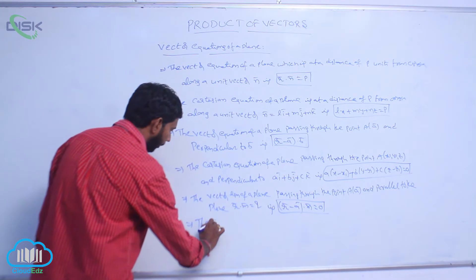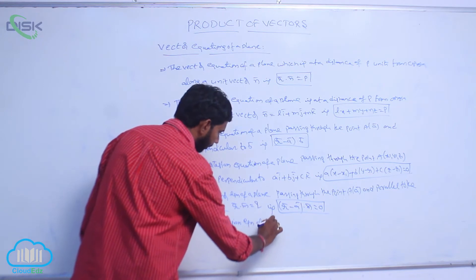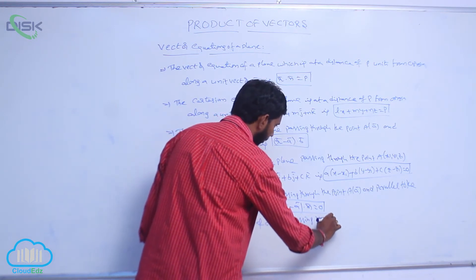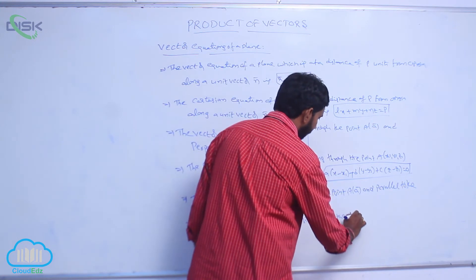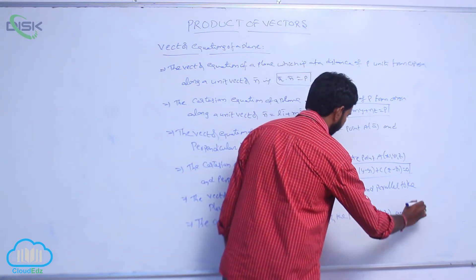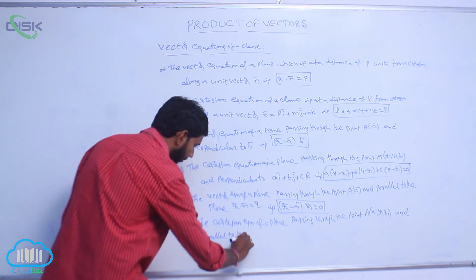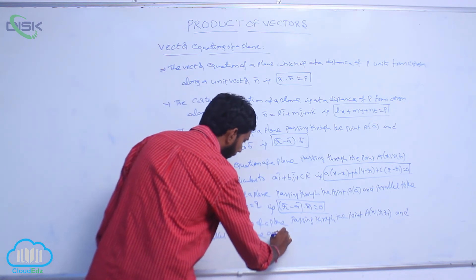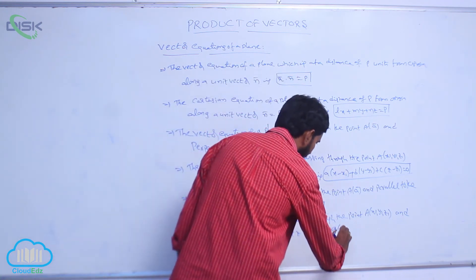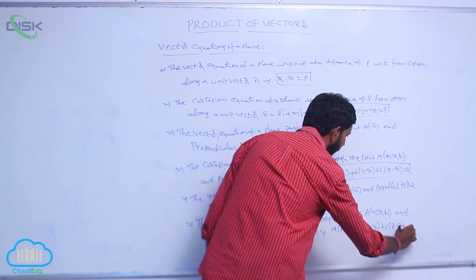The Cartesian equation of a plane passing through the point A(x1, y1, z1) and parallel to the plane ax + by + cz + d = 0 is: a(x − x1) + b(y − y1) + c(z − z1) = 0.